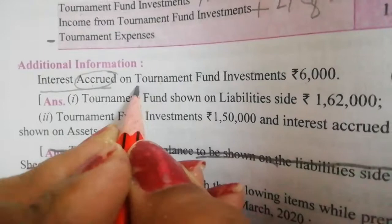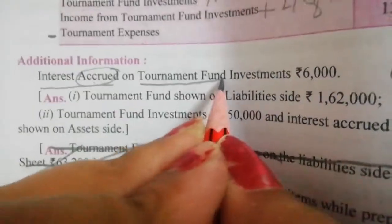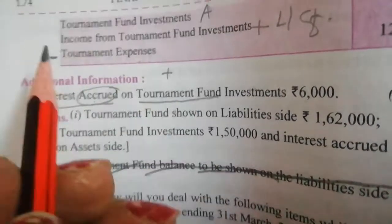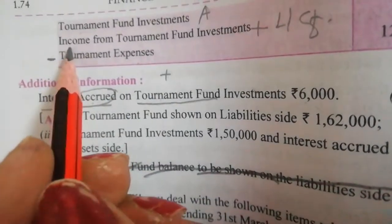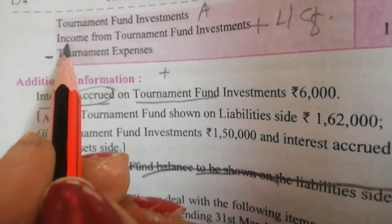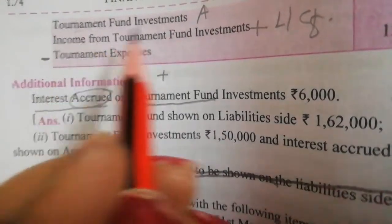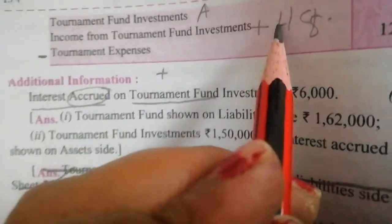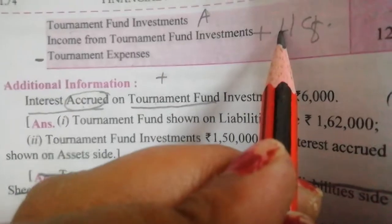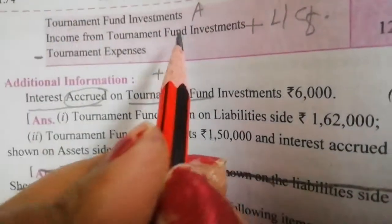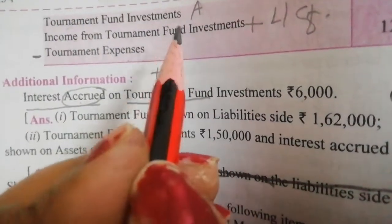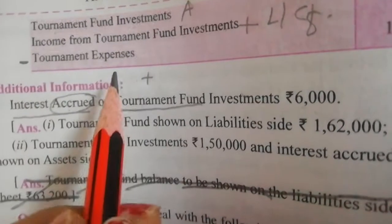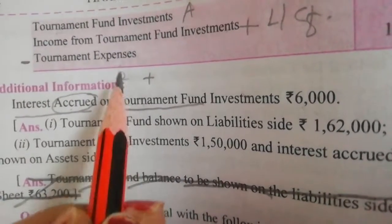You do the tournament fund on the liability side, because just like income from tournament fund investment, you do it on the liability side. Since it was additional information — like in Class 11, when an adjustment is given, there are 2 entries.